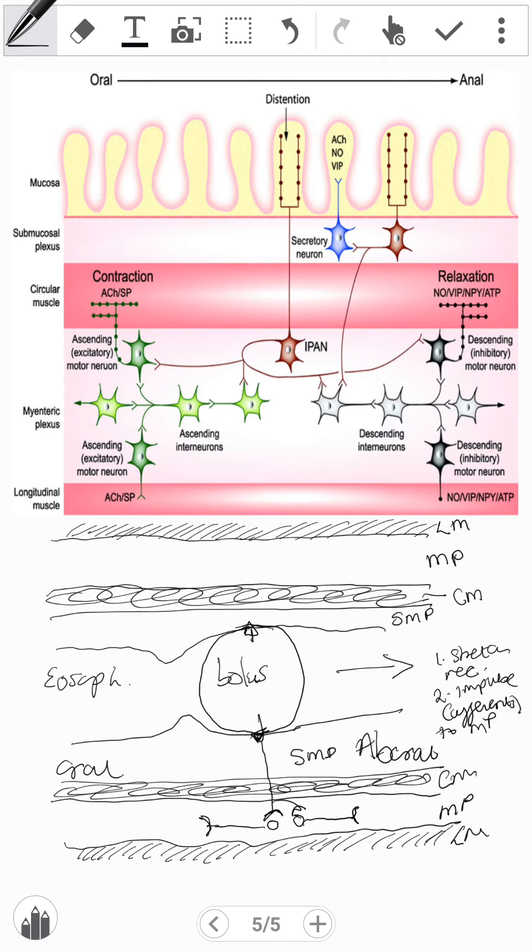So the excitatory type will synapse on other interneurons within the plexus, which will then release neurotransmitters.